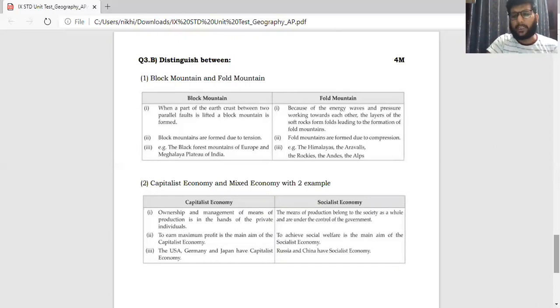Let's talk about the block and the fold mountains. Block mountains. When a part of the earth's crust between two parallel faults is lifted, a block mountain is being formed. On the other hand, because of the energy waves and pressure working towards each other in opposite direction, the layers of the soft rock may fold. They may create folds, leading to formation of the fold mountains. Block mountains are formed due to tension. And fold mountains are formed due to compression. Likewise, the Black Mountains of Europe and Meghalaya Plateau of India are an example of that. And in fold mountains you have the Himalayas, the Rockies, the Andes, the Alps. Any one to two examples is more than enough. So over here you can score full two marks.